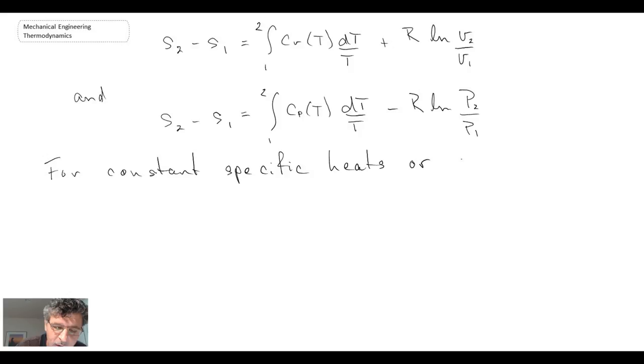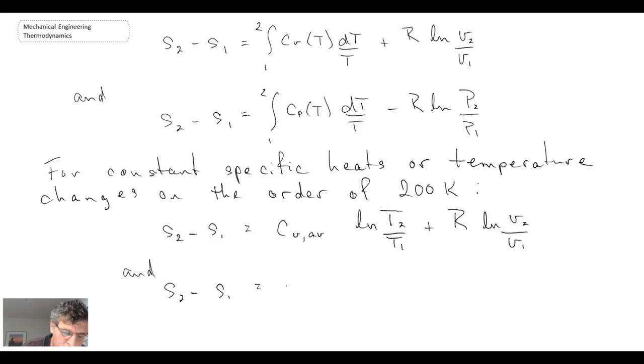Or what you do is you make an approximation that the temperature change will be relatively small. And typically, whenever we say relatively small here with specific heats, we mean on the order of about 200 degrees Kelvin. So those are two equations that result that if you can make the approximation of constant specific heats over a small temperature differential, you can use them.